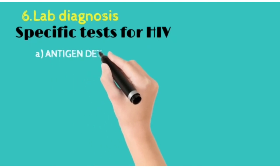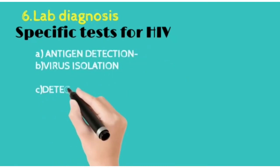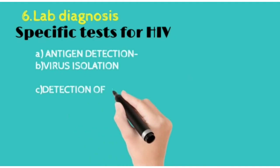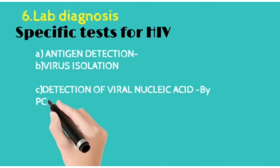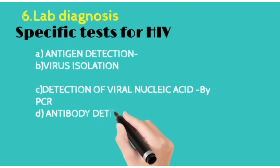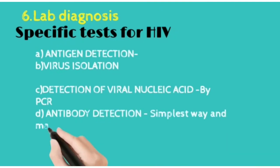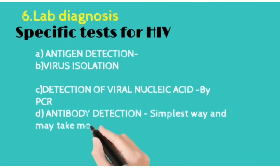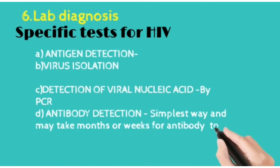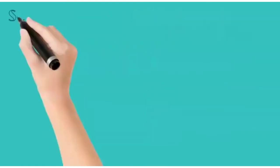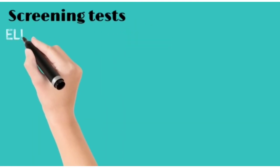For lab diagnosis, specific tests for HIV include antigen detection, virus isolation, and detection of viral nucleic acid done by PCR. Antibody detection is also performed and is the simplest way, though it may take weeks or months.